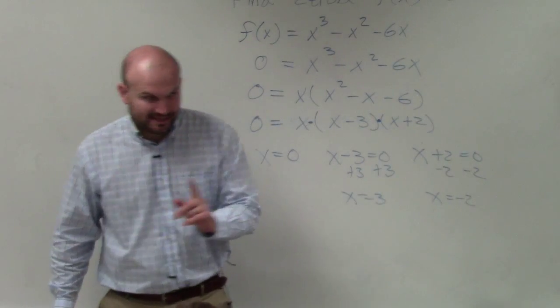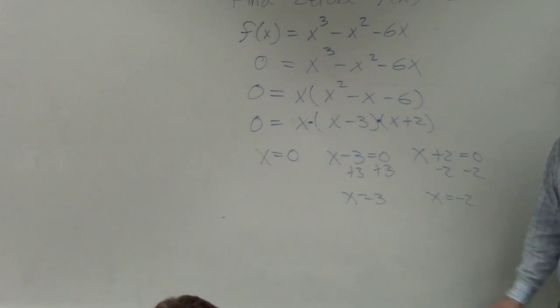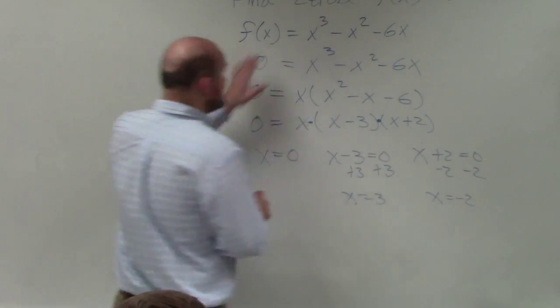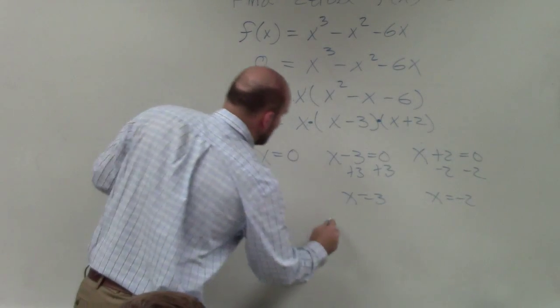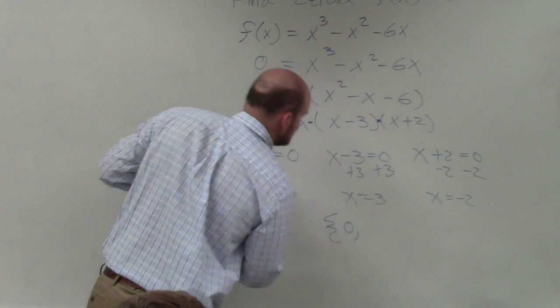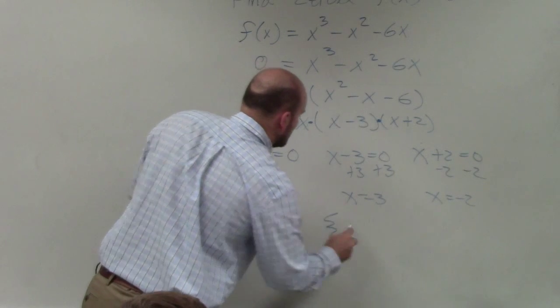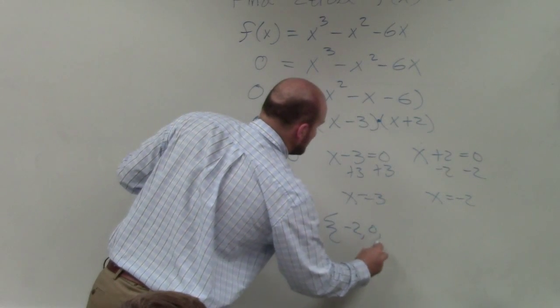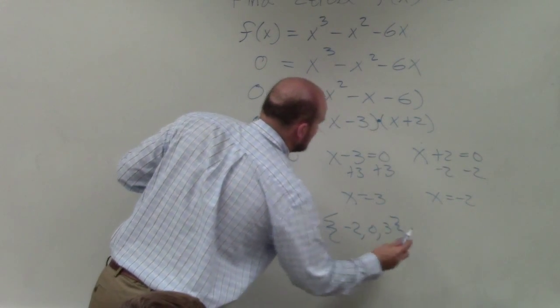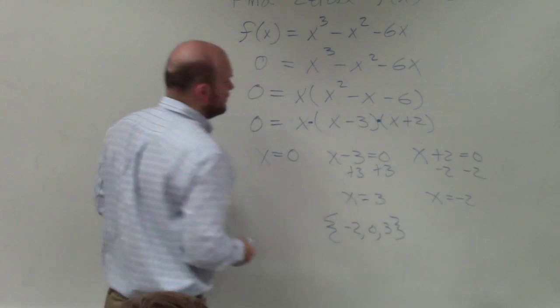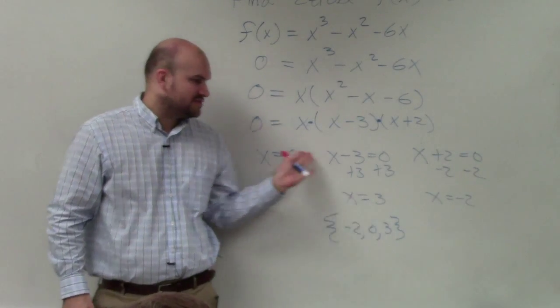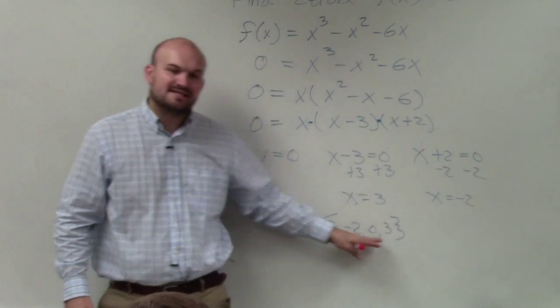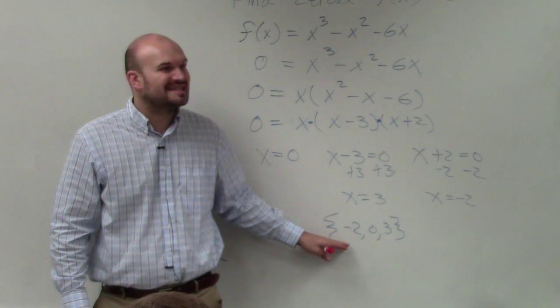You guys might see, and actually I would prefer sometimes for you guys to be able to write your solutions as a solution set. The zeros, or the solutions that make this equation true, let's go ahead and write it in order, are negative 2, 0, and 3. Do you guys see what I did? All I simply did was just take each zero and write it as a set of numbers. It's called the solution set.